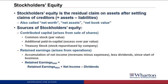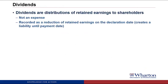The other source of stockholders' equity is retained earnings, which arise from operating the business. Retained earnings is the accumulation of net income — which is revenues minus expenses — less any dividends that have been paid out since the start of the business. Dividends are distributions of retained earnings to shareholders. They're not considered an expense, and we record them as a reduction of retained earnings on the date the board declares the dividend — the declaration date. If we don't pay in cash on that date, it will create a liability to our shareholders until we actually pay on the payment date.